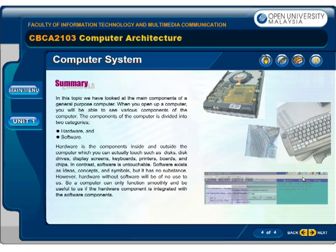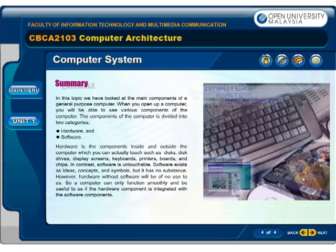In this topic, we have looked at the main components of a general purpose computer. When you open up a computer, you will be able to see various components. The components of the computer are divided into two categories: hardware and software. Hardware is the components inside and outside the computer which you can actually touch, such as disks, disk drives, display screens, keyboards, printers, boards, and chips.